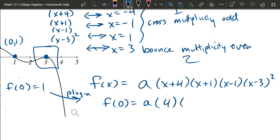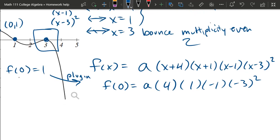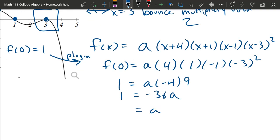So take 0 and plug it in. We've got 0 plus 4 is 4, 0 plus 1 is 1, 0 minus 1 is minus 1, and 0 minus 3 is minus 3 squared. So we've got 4 times negative 1 times negative 1 times negative 3 squared. That's 4 times 9 is 36. So negative 36a equals 1, and a is negative 1 over 36.